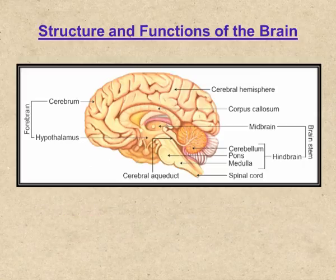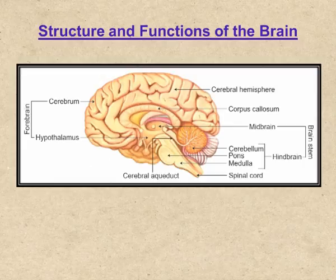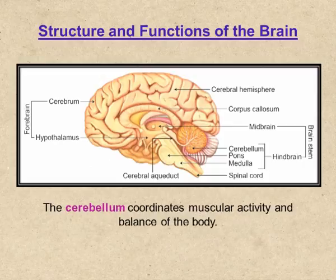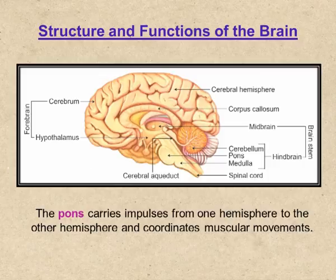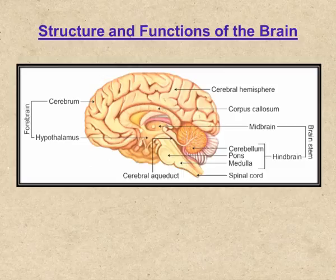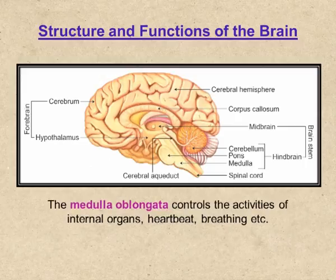The hindbrain includes the cerebellum, pons varolii, and medulla oblongata. The cerebellum is located at the base of the cerebrum and coordinates muscular activity and balance of the body. The pons carries impulses from one hemisphere and coordinates muscular movements on both sides of the body. The medulla oblongata is located at the base of the skull and continues as the spinal cord. It controls the activities of the internal organs such as heartbeat and breathing. Injury to the medulla oblongata results in death.